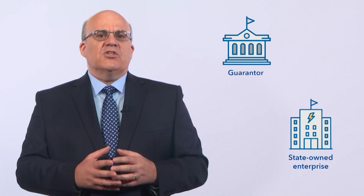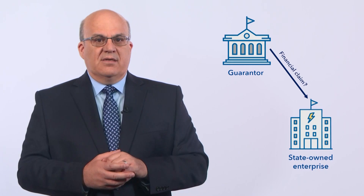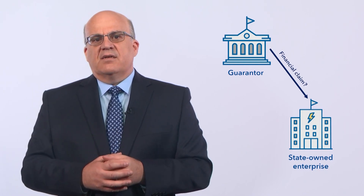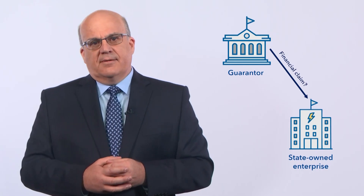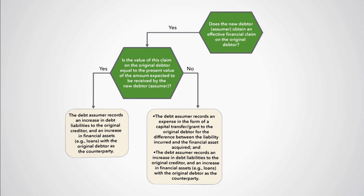What happens between the state-owned enterprise and the central government depends on whether the government has an effective financial claim, in the form of either a debt instrument such as a loan, or a non-debt instrument such as equity, on the state-owned enterprise. If the answer is yes, then the central government records an increase in its financial assets, such as loans. The counterpart entry is a decrease in its financial assets in the form of currency and deposits. The state-owned enterprise records a decrease in its original debt liability to the local bank and an increase in another liability to the central government. This new liability could be in the form of a debt or a non-debt instrument.